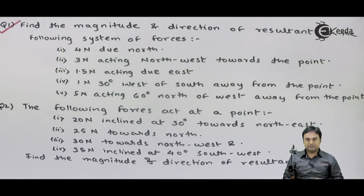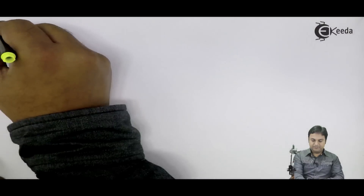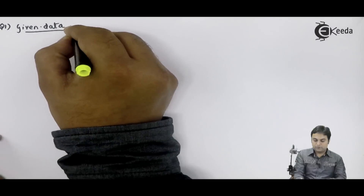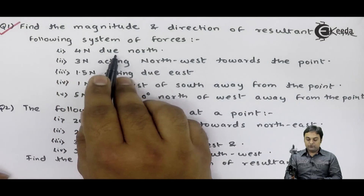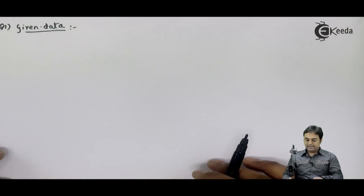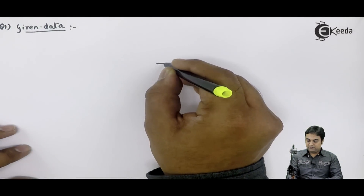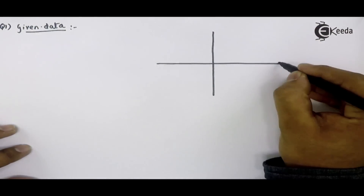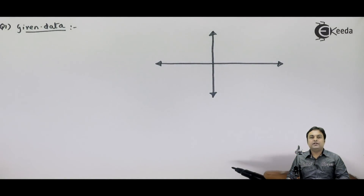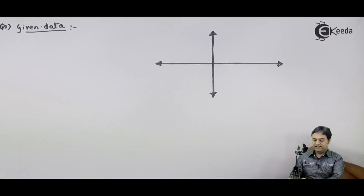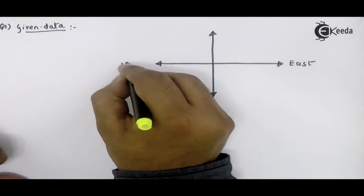We have to calculate the resultant — its value — and also locate it. We will start by writing the data and drawing it in the form of a diagram. Since the directions are given as north, south, east, and west, instead of x and y axes I will mark the compass directions.